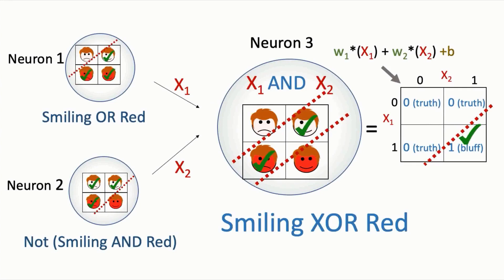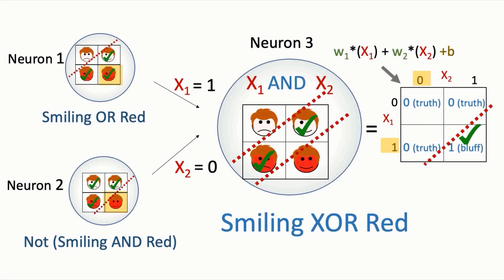Let's see how this works together. When the input is a face that is neither smiling nor red, neuron 1 outputs 0 and neuron 2 outputs 1. This does not satisfy neuron 3, which wants both outputs to be 1, so neuron 3 outputs 0 — meaning the friend is telling the truth. When the face is red and smiling, neuron 1 outputs 1 and neuron 2 outputs 0 — again not satisfying neuron 3's AND condition, so neuron 3 again outputs 0.